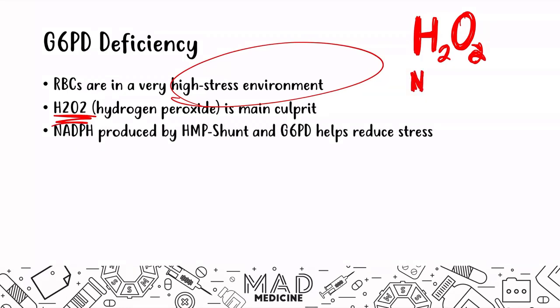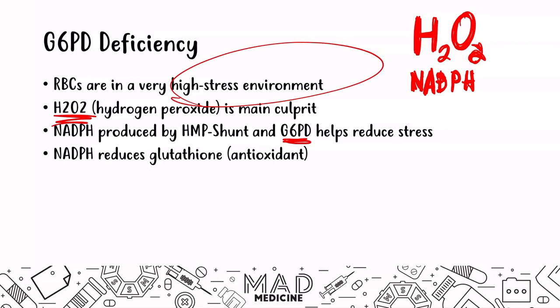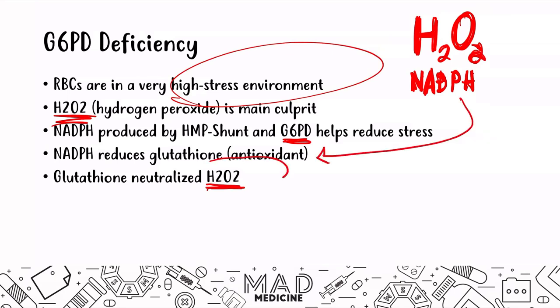NADPH is produced by the HMP shunt via the help of G6PD — the enzyme that is missing in this disorder. NADPH produces a molecule called glutathione, which is an antioxidant. NADPH reduces glutathione into its active form, and glutathione then neutralizes hydrogen peroxide. So NADPH activates glutathione, which attacks hydrogen peroxide and negates its effects.